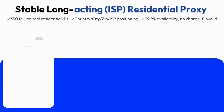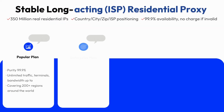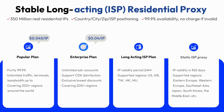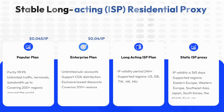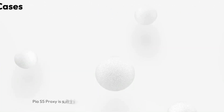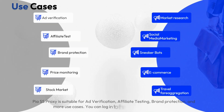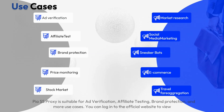Currently there are three plans: the popular plan, enterprise plan, and long-acting ISP plan with static ISP proxy. PiAs5Proxy is suitable for ad verification, affiliate testing, brand protection, and more use cases.